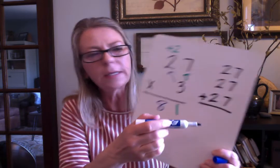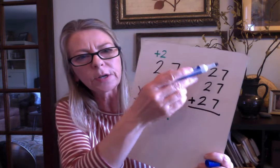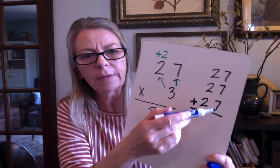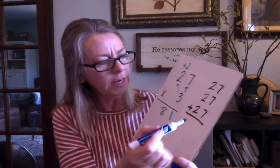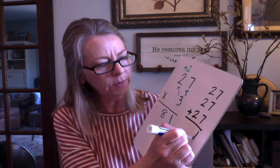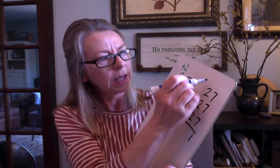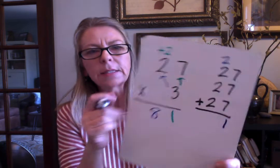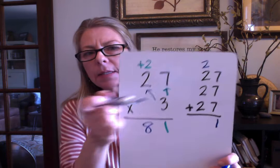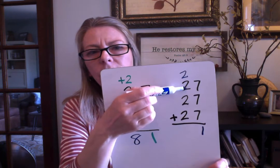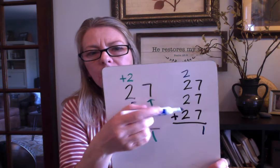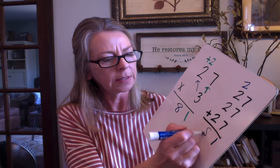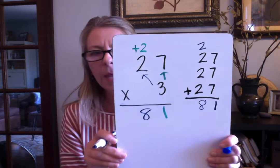Let's check with our addition. We always start with our ones — seven plus seven plus seven, we know is 21. We put our two tens up in the tens. Now we add all our tens: two, four, six, eight. And there is our answer, 81.